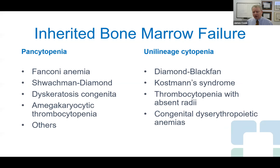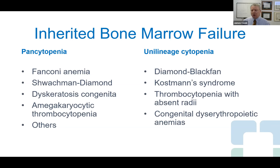The uni-lineage disorders affecting just one cell type include pure red cell aplasia, agranulocytosis, and amegakaryocytic thrombocytopenic purpura. There is also a longer list of inherited disorders, some producing pancytopenias and others affecting only one cell type. We'll focus on Fanconi anemia as one of the better understood hereditary disorders, which serves as a nice example of how we understand inherited bone marrow failure syndromes.